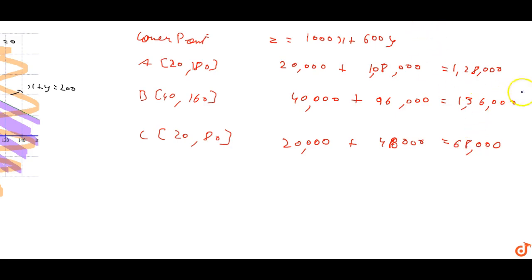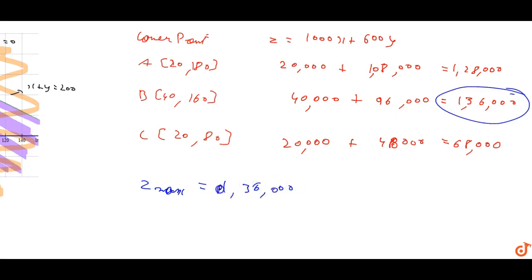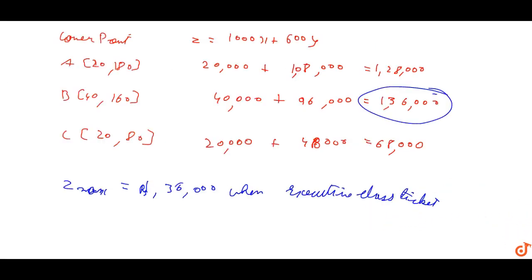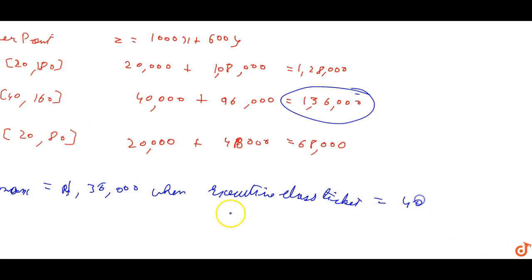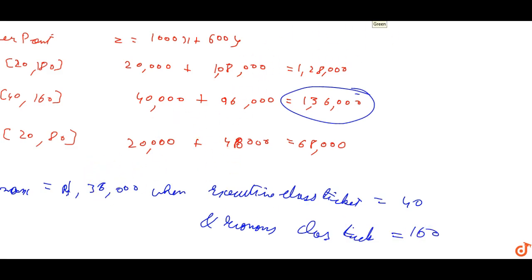The maximum profit is rupees 1,36,000. The maximum profit occurs when executive class tickets sold is 40 and economy class tickets sold is 160. So the maximum profit the airline can earn is one lakh thirty-six thousand rupees.